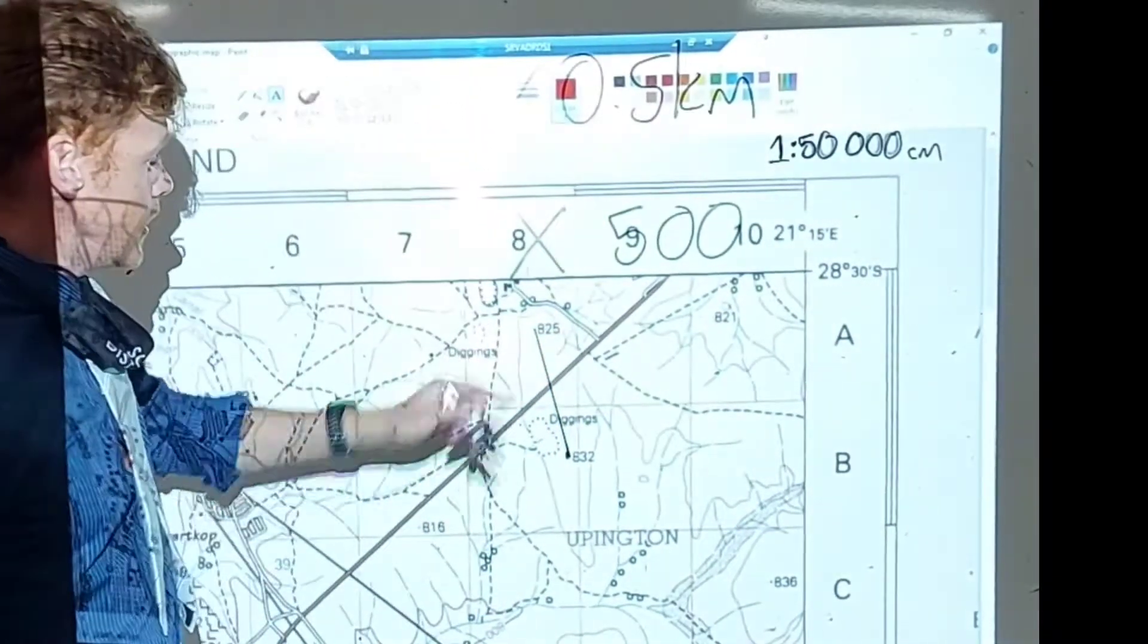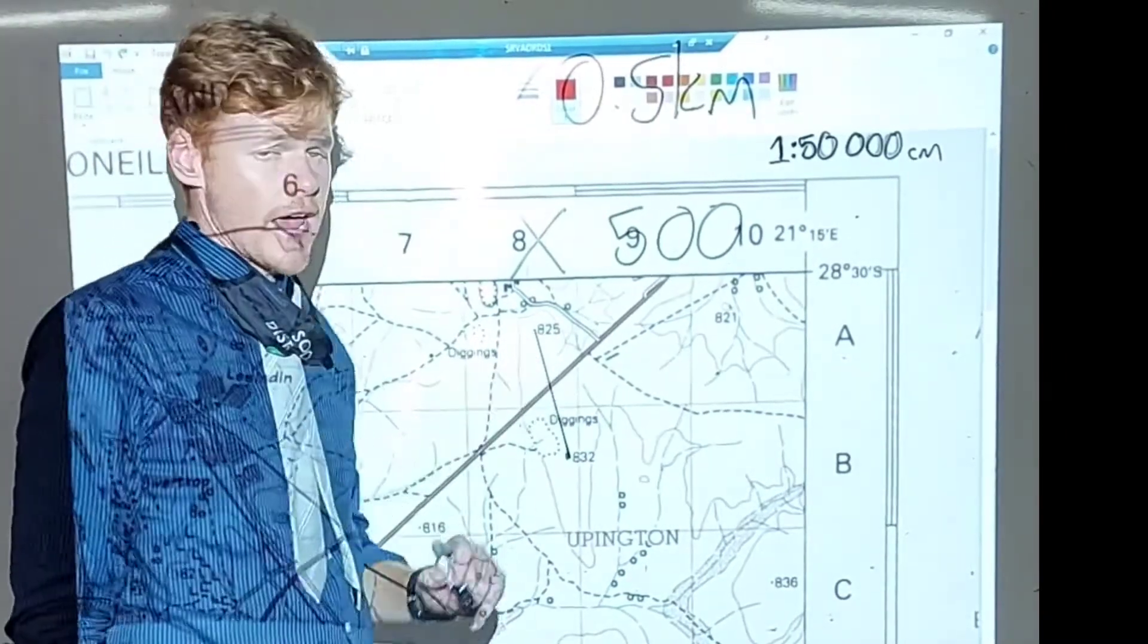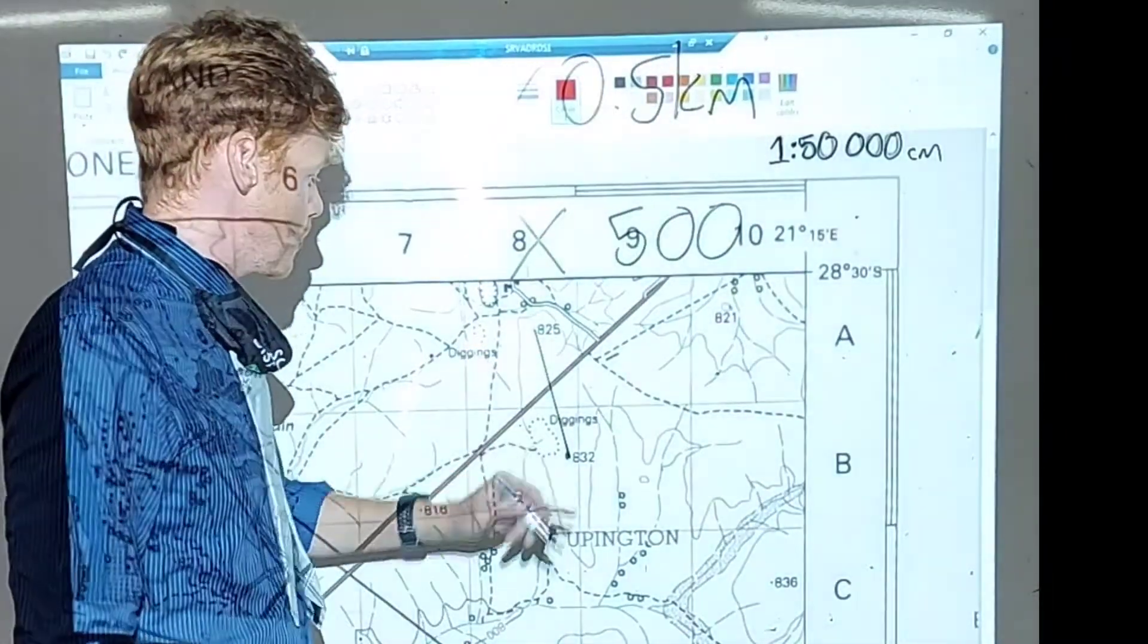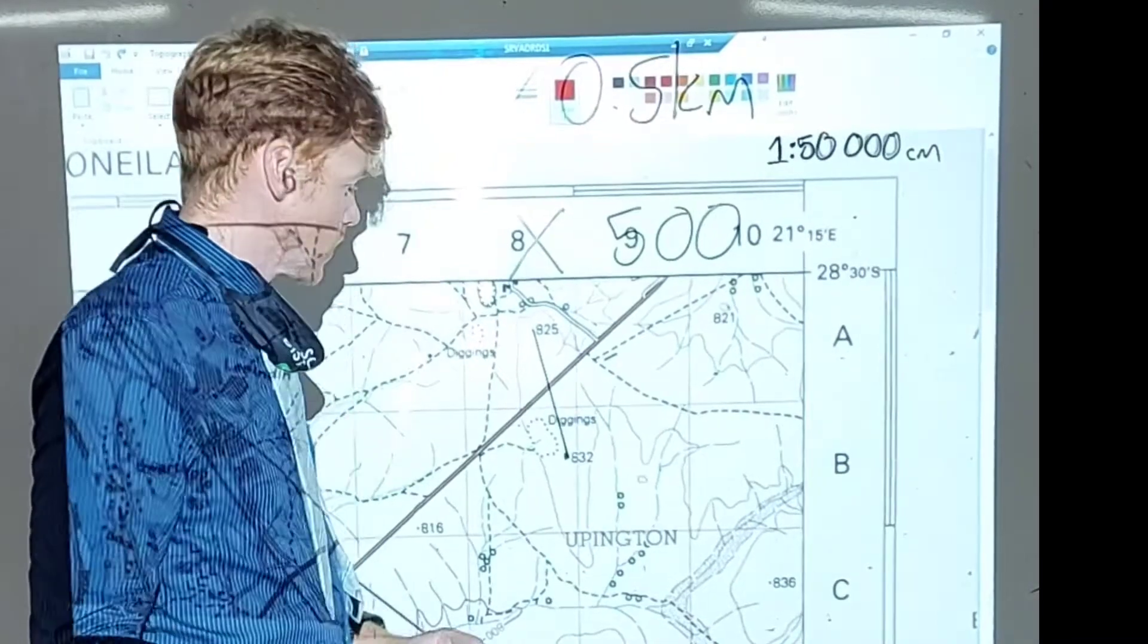So we want to know, what is the distance, as the crow flies, from spot height 825 to spot height 835, or 832.